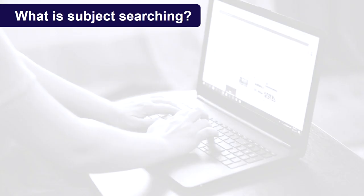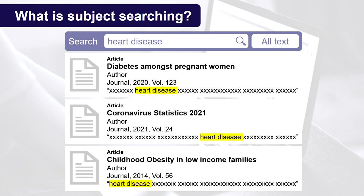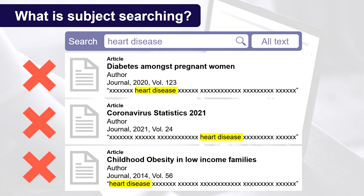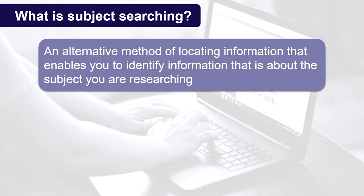So what is subject searching? Most of the time researchers will use keyword searching to locate the information they need. This is where search engines and databases find information that contains the combination of keywords you enter. But pieces of information could contain your keywords and not be about the topic you're interested in, and therefore irrelevant to your research. Subject searching is an alternative method of locating information that addresses this issue, which enables you to identify information that is about the subject you're interested in. The most robust searches may employ a mixture of keyword and subject searching.